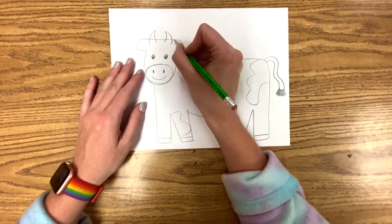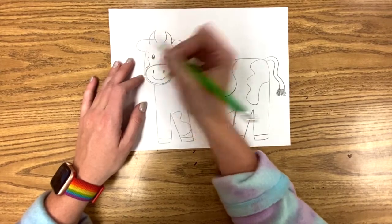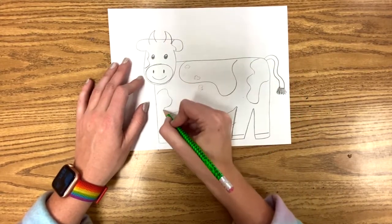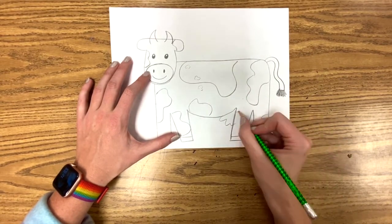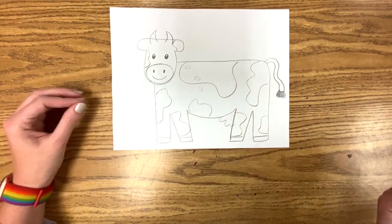A nice big spot. Don't forget the legs. You can put one on the ear. You can put one on the face. I'm going to put a spot right here. Put spots wherever you think your cow should be spotted.